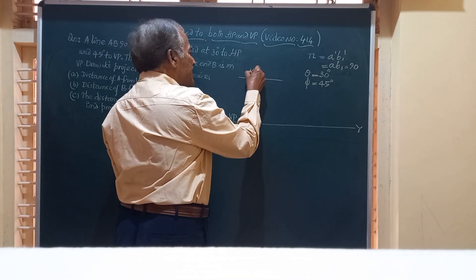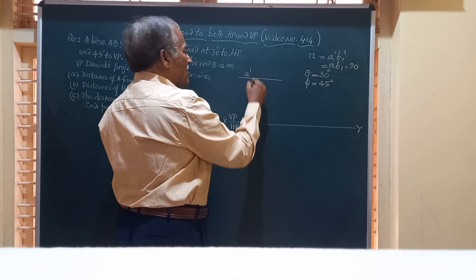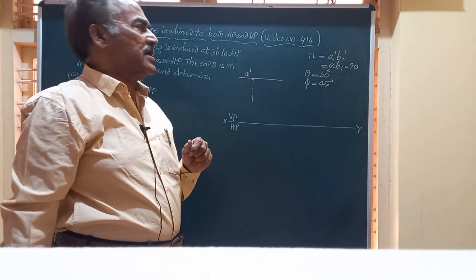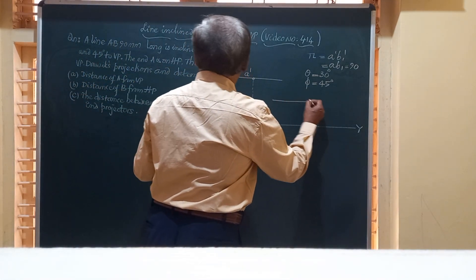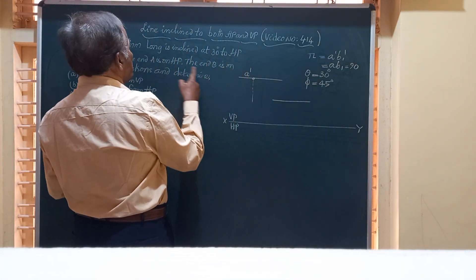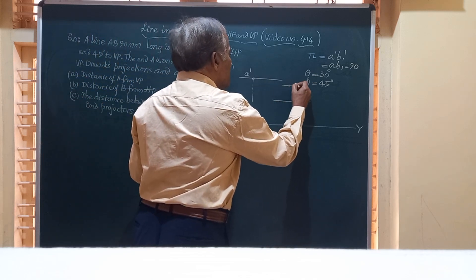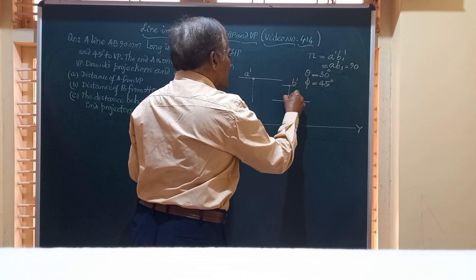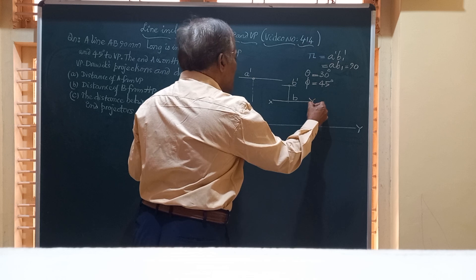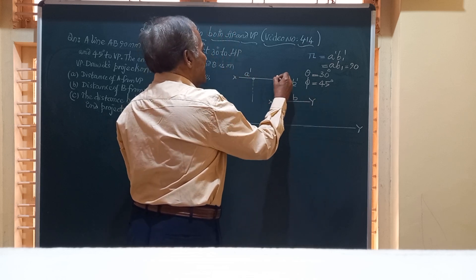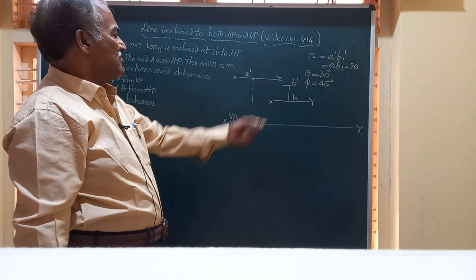When end A is on HP, its front view is always obtained on XY as A dash, and the top view of B will be somewhere along the locus through A dash. Similarly, since end B is on VP, B becomes B dash, and the top view of B is obtained on the XY line.